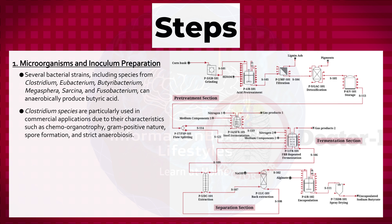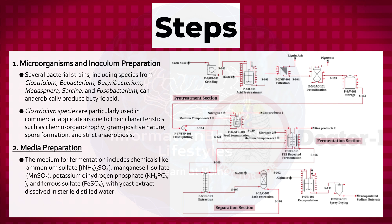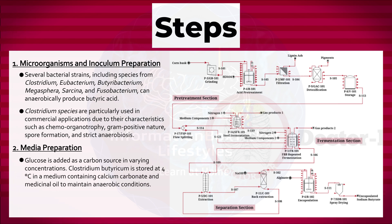Second, media preparation: the medium for fermentation includes chemicals like ammonium sulfate, manganese(II) sulfate, potassium dihydrogen phosphate, and ferrous sulfate, with yeast extract dissolved in sterile distilled water. Glucose is added as a carbon source in varying concentrations. Clostridium butyricum is stored at 4 degrees Celsius in a medium containing calcium carbonate and medicinal oil to maintain anaerobic conditions.